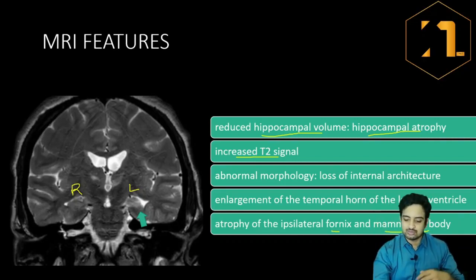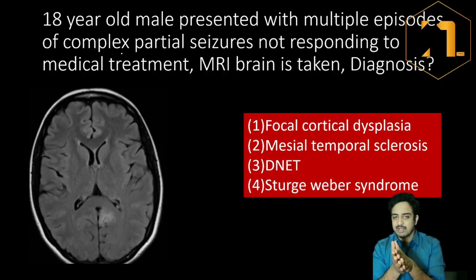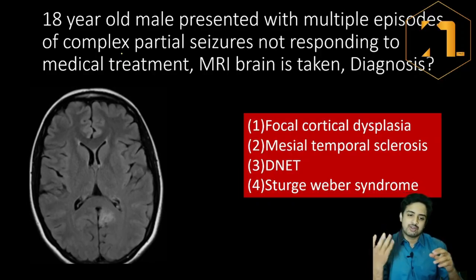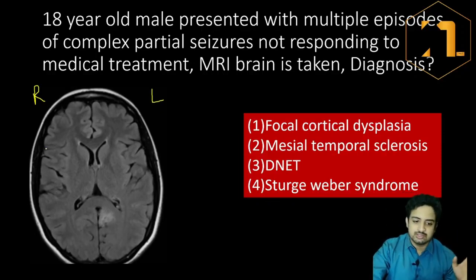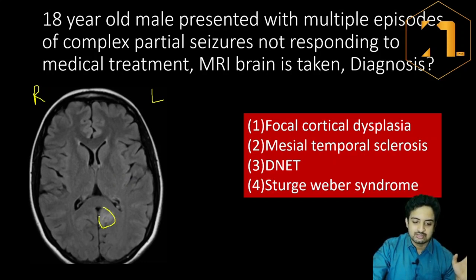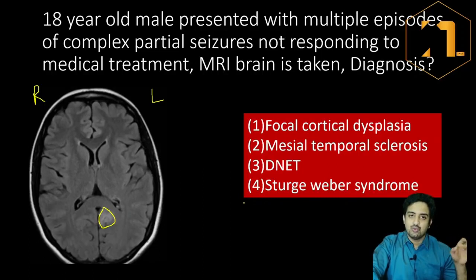Now, the second case — another 18-year-old male with multiple episodes of complex partial seizures intractable to medical treatment. MRI is taken. Looking at the image: the right side shows normal frontal region, caudate nucleus, thalamus. On the left side, in the left parieto-occipital region, there is an irregular hyperintensity. The options are focal cortical dysplasia, mesial temporal sclerosis, DNET, and Tuberous sclerosis. This is a case of focal cortical dysplasia.